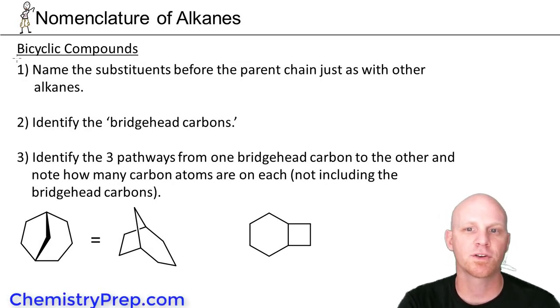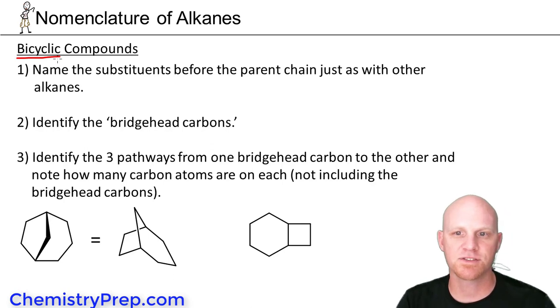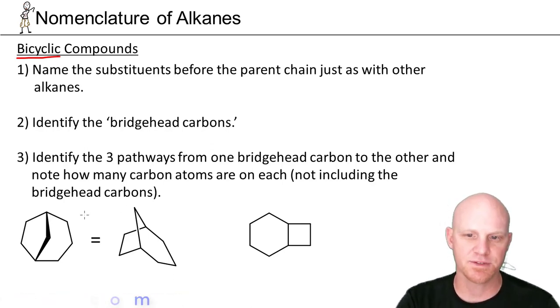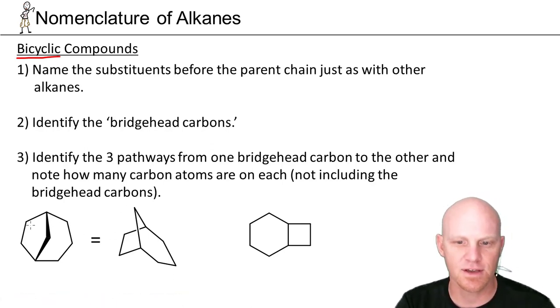Now we need to take a look at naming what are termed bicyclic compounds. These are polyring systems. We've got a couple down at the bottom here, but you can see it's not just a simple cycloalkane. It's a combination of cycles.